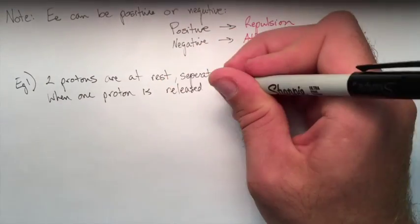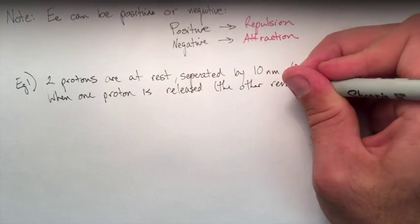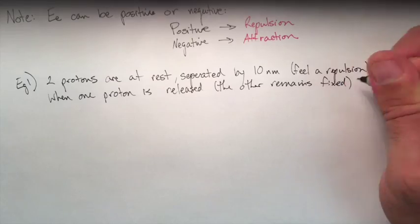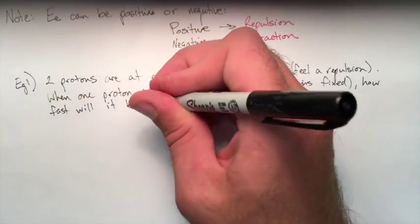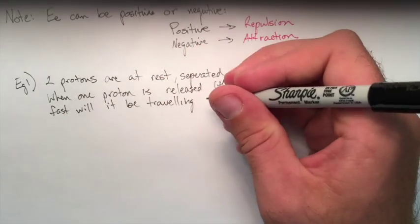When one proton is released and the other one remains fixed, how fast will it be traveling after the separation between them is 10 centimeters?